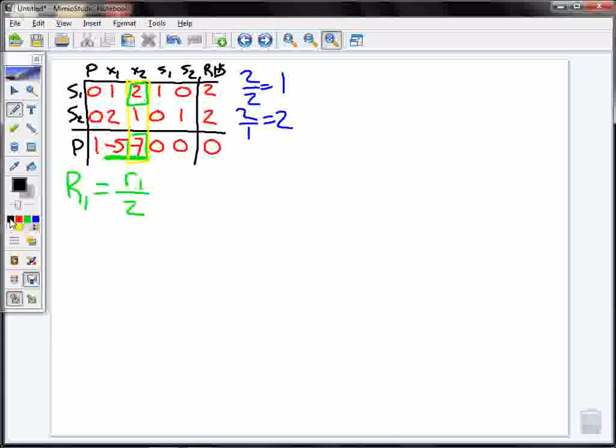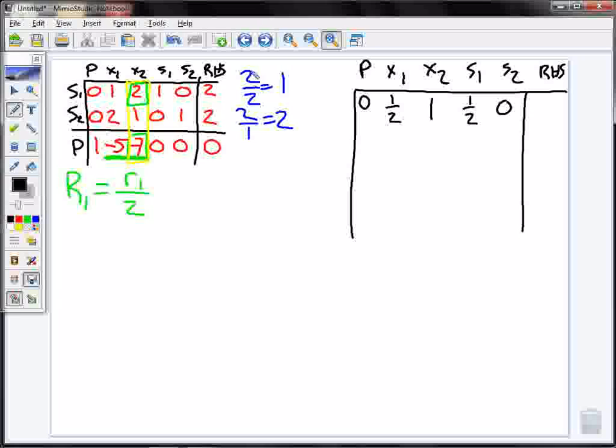So what I get over here. I have p, x1, x2, s1, s2, my right hand side. And I'm going to divide everything in row 1 by 2. 0 divided by 2 is 0. 1 divided by 2 is 1 half. 2 divided by 2 is 1. That's the whole reason we did this. 1 divided by 2 is 1 half. We see s2 over here is 0, so 0 divided by 2 is still 0. And my right hand side, 2 divided by 2 is 1.